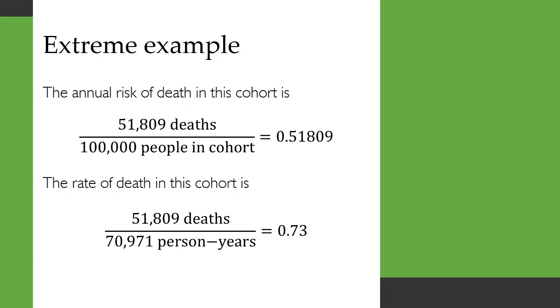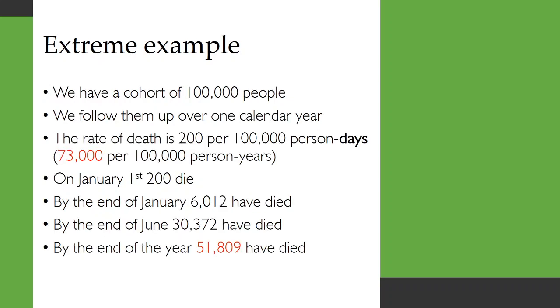The rate of death in this cohort is 51,809 deaths divided by the number of person-years that were lived. It's not actually 100,000 person-years, because lots of people didn't live for the full year. In fact, we can calculate that there were only 70,971 person-years lived. And therefore, when we divide the top by the bottom, we get 0.73, which is exactly equal to 73,000 per 100,000.